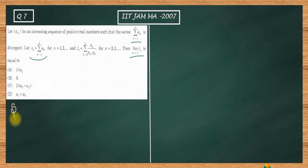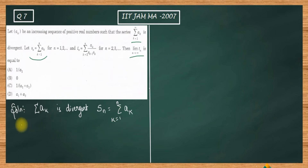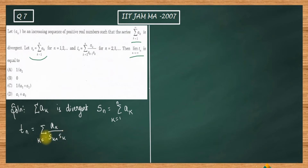So what is given to us: summation of aₖ is a divergent series. Second, they define sₙ as the summation of aₖ from k=1 to n. They also define tₙ as the summation of aₖ divided by (sₖ₋₁ · sₖ), where k varies from 2 to n. We want the limit of tₙ as n goes to infinity.